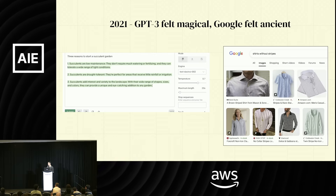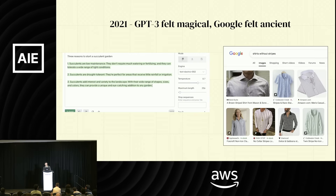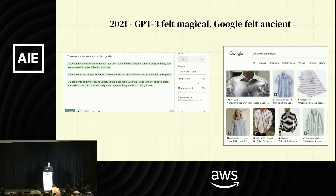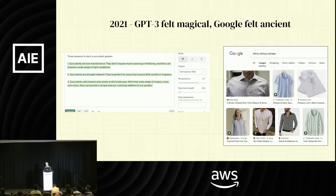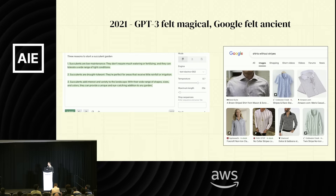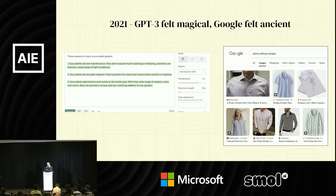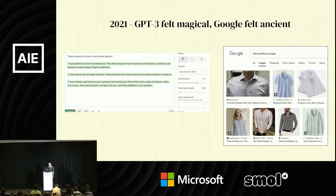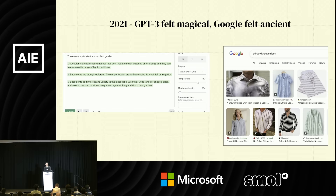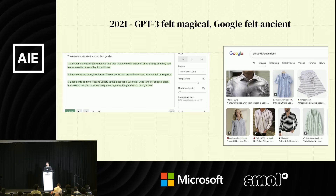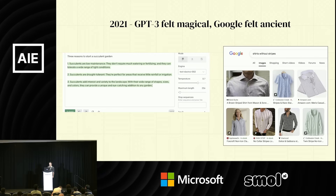At the same time I noticed there was Google, where you type in a simple query like 'shirts without stripes' and it would give you shirts with stripes, which is crazy. It doesn't understand the word 'without' because it's doing a keyword comparison algorithm.